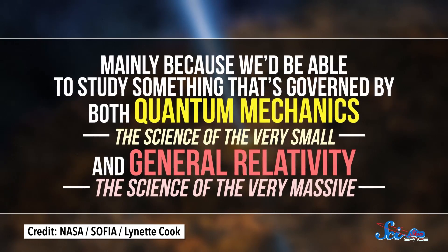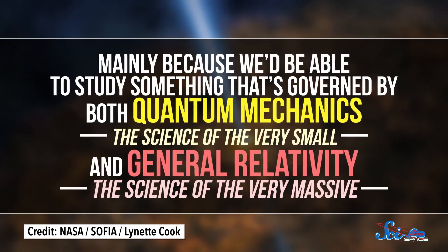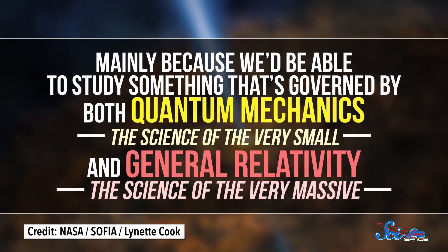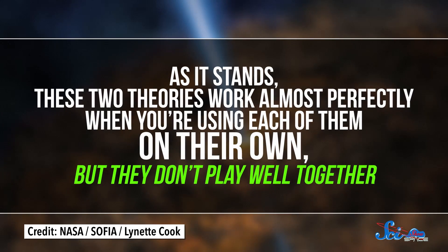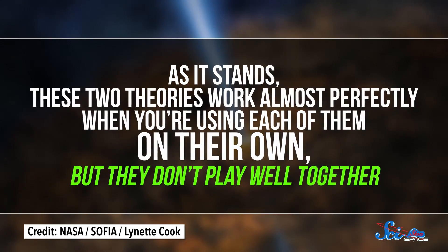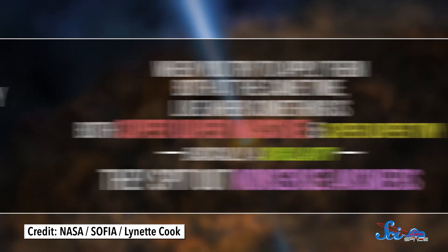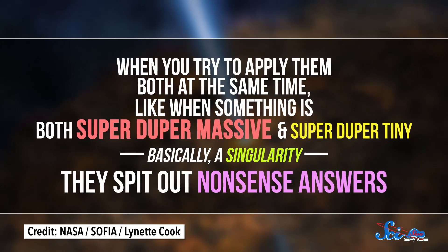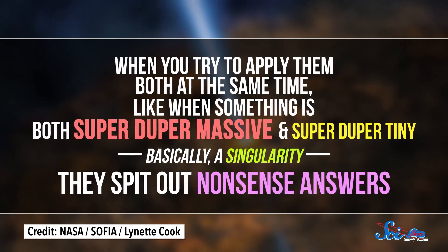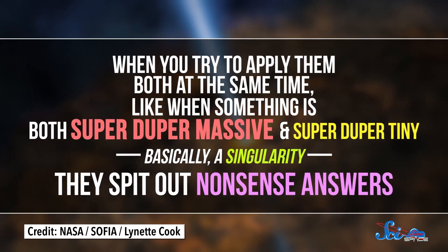Mainly because we'd be able to study something that's governed by both quantum mechanics, the science of the very small, and general relativity, the science of the very massive. As it stands, these two theories work almost perfectly when you're using each of them on their own, but they don't play well together. When you try to apply them both at the same time, like when something is both super-duper massive and super-duper tiny, basically a singularity, they spit out nonsense answers.